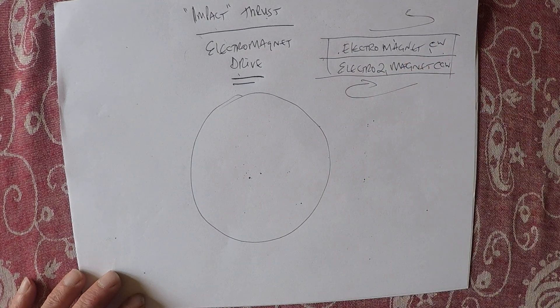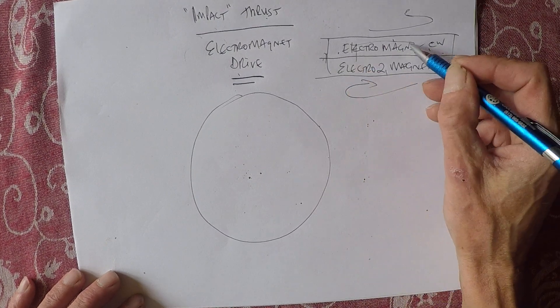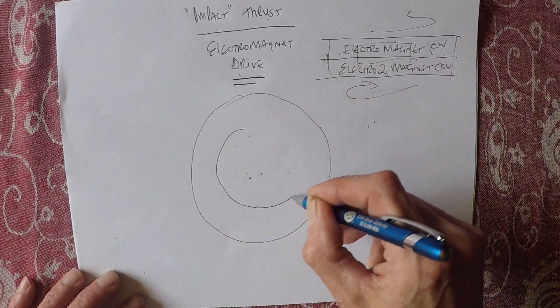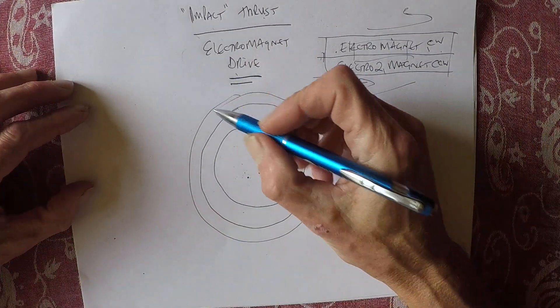Okay, now in between this - or sorry, in the middle. Let's say, so you've got your rings that way. So these are electromagnets.